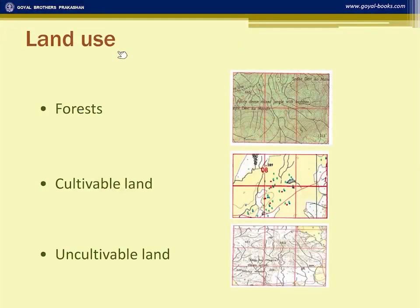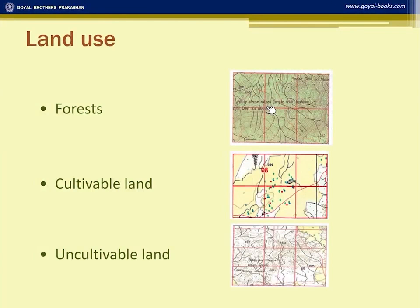Now we come to land use. In the survey sheet, some areas are shown in green, some in yellow, and some in white. Forests are generally shown in green, with labels such as 'fairly dense mixed jungle with bamboo,' 'open mixed jungle,' or 'dense forest.' If a question asks what type of forests are found, you simply state what is written there — you don't need to mention deciduous or evergreen from your geography studies. In this case, it is written 'fairly dense mixed jungle with bamboo.'